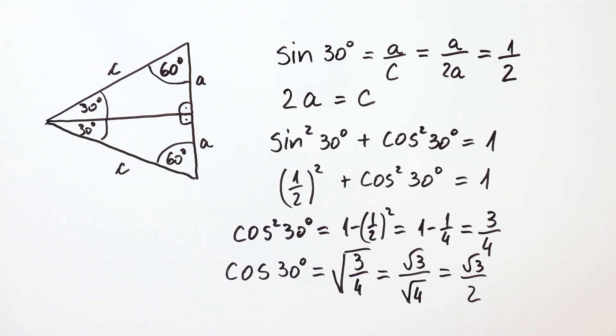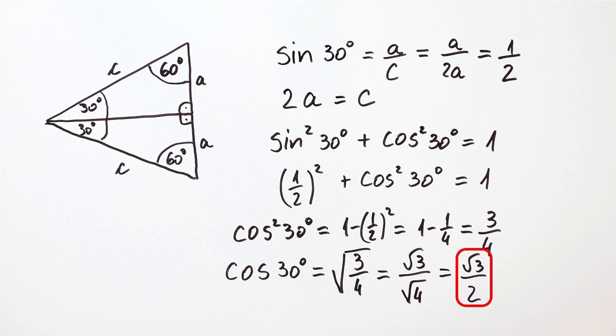And finally, from the sine squared of 30 degrees plus the cosine squared of 30 degrees is equal to 1, we got that the cosine of 30 degrees is equal to the square root of 3 over 2.